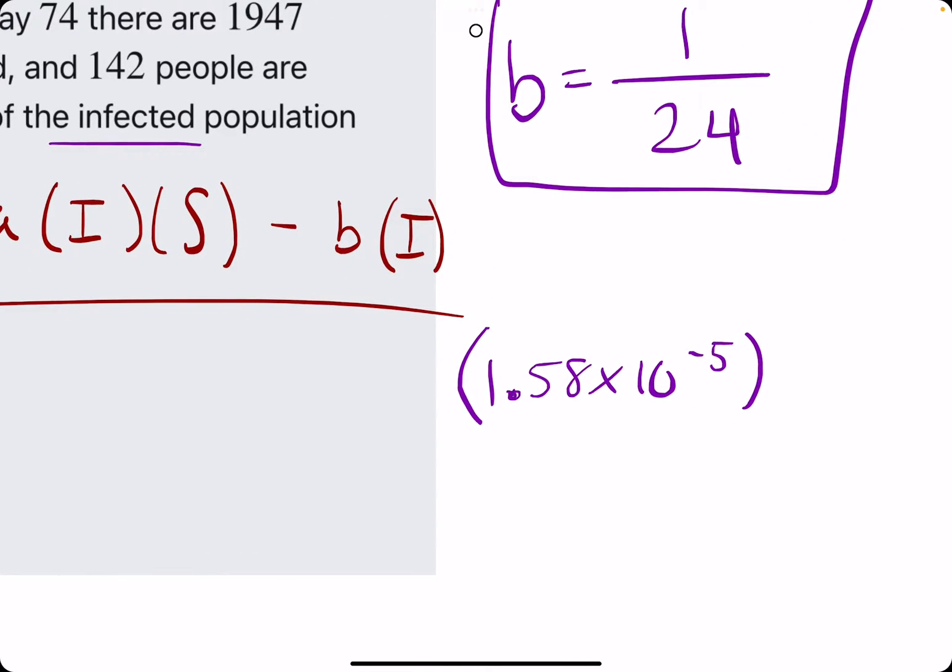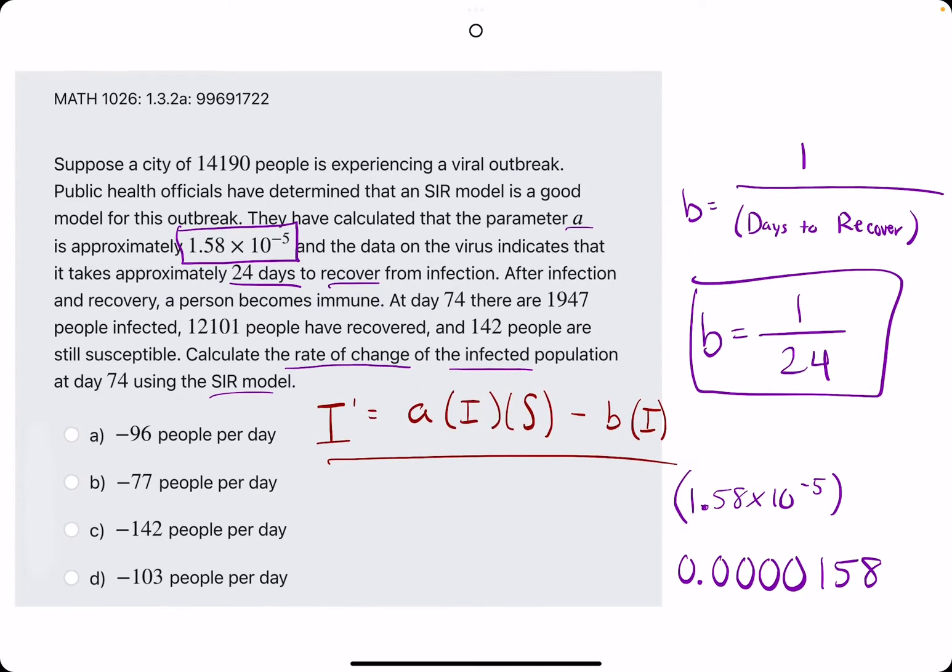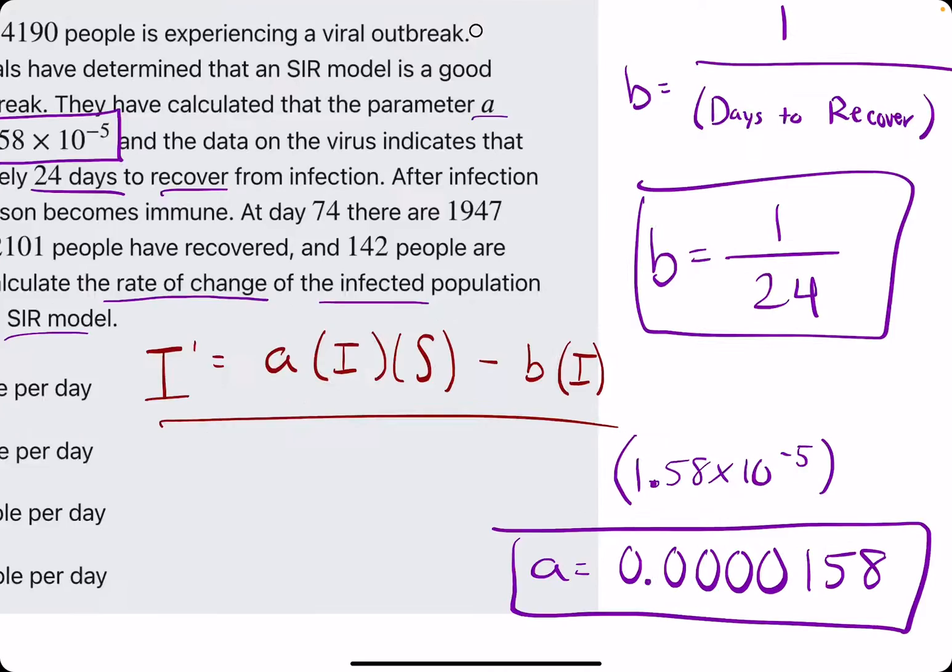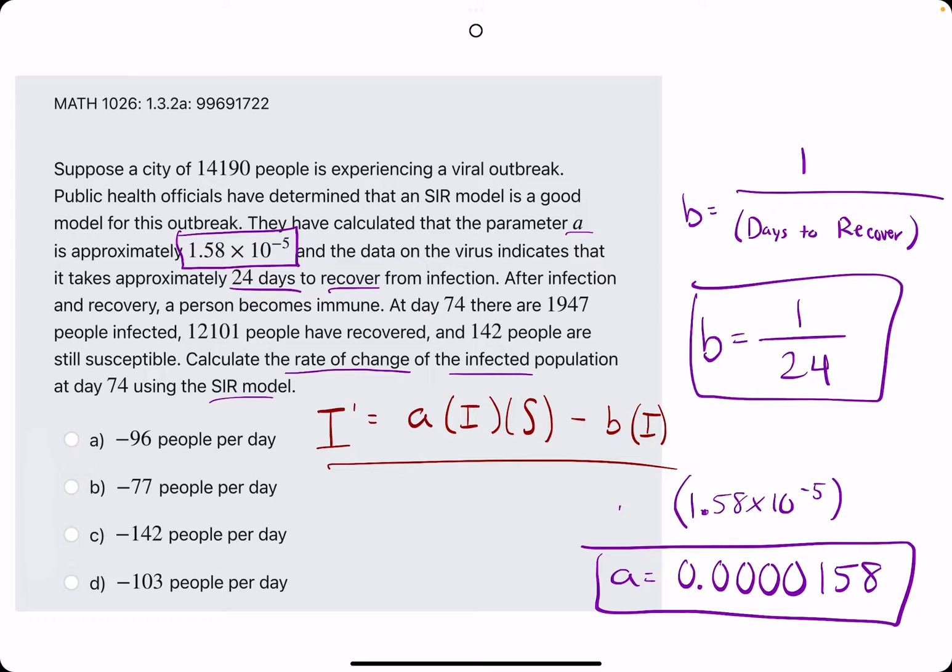Otherwise, it's basically just telling us we need to have 0.0000 and then the fifth value is the start of the 158. So our A is equal to this if you prefer the decimal, or this if you prefer the scientific notation.